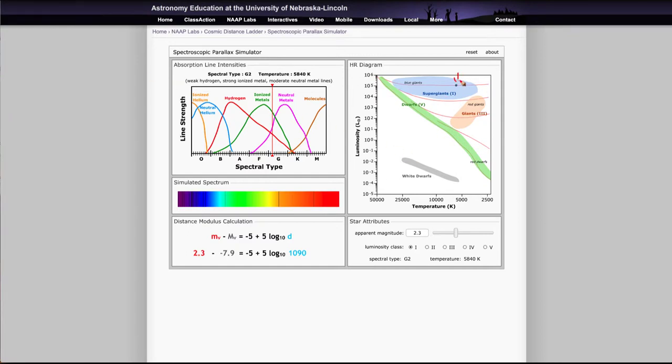And that's because a supergiant star is really intrinsically very bright. It's way up here at a high luminosity. So in order for it to appear this faint, it has to be at a tremendous distance.